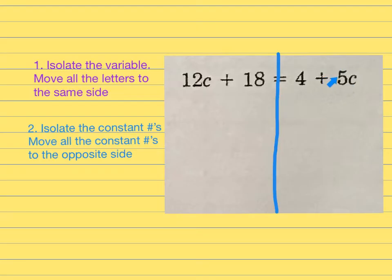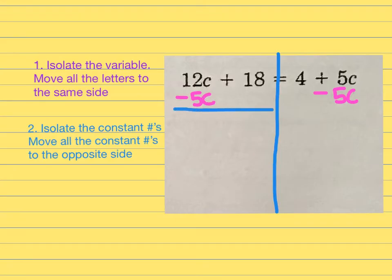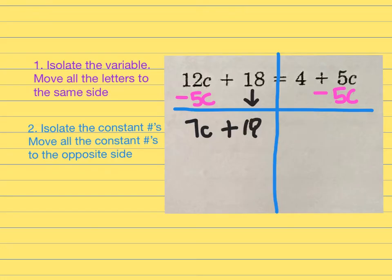To get rid of 5c, since it's being added, the opposite is to subtract or use a negative — they mean the same thing. So minus 5c on both sides. Writing vertically, 12 minus 5 is 7c. I bring down the plus 18 equals, and then just 4 is left because 5c minus 5c canceled out.